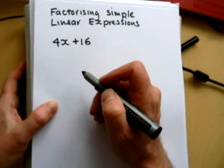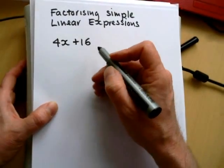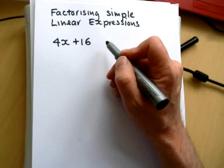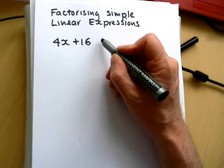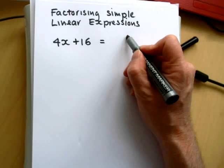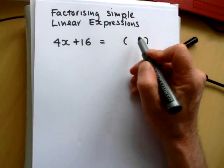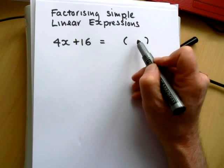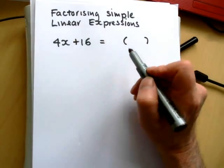In this short video I'm going to show you how we can factorise some simple linear expressions. We've got 4x plus 16 and we need to write that when we factorise. We usually put something in brackets and we have one term or number multiplying something in the brackets that gives us what we started with.